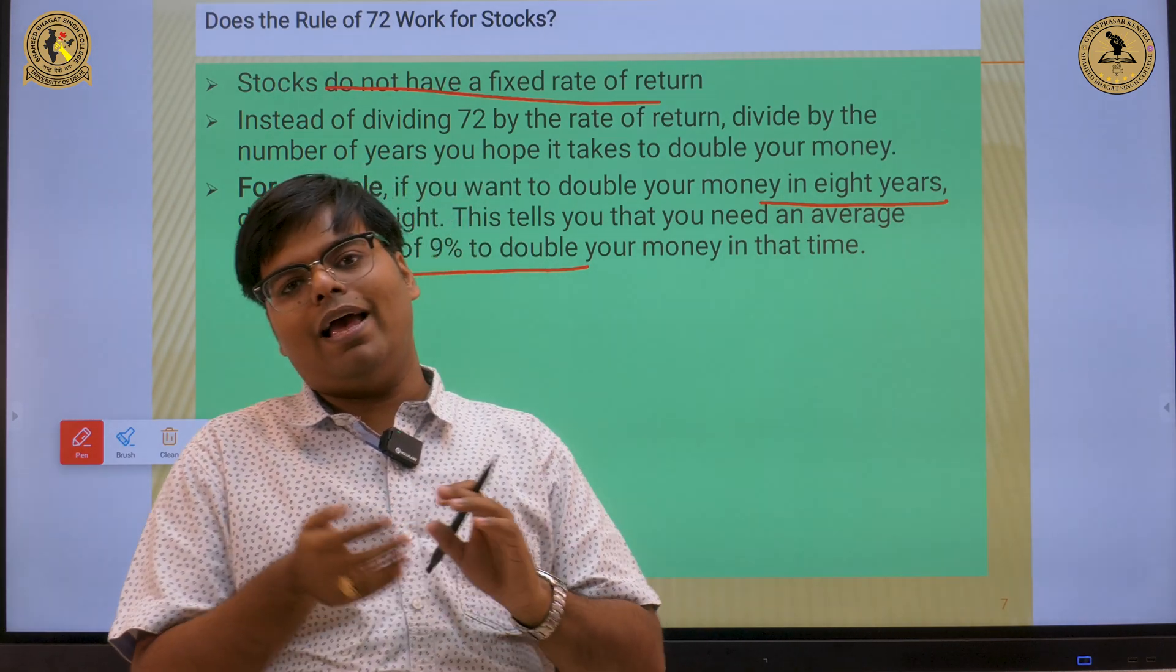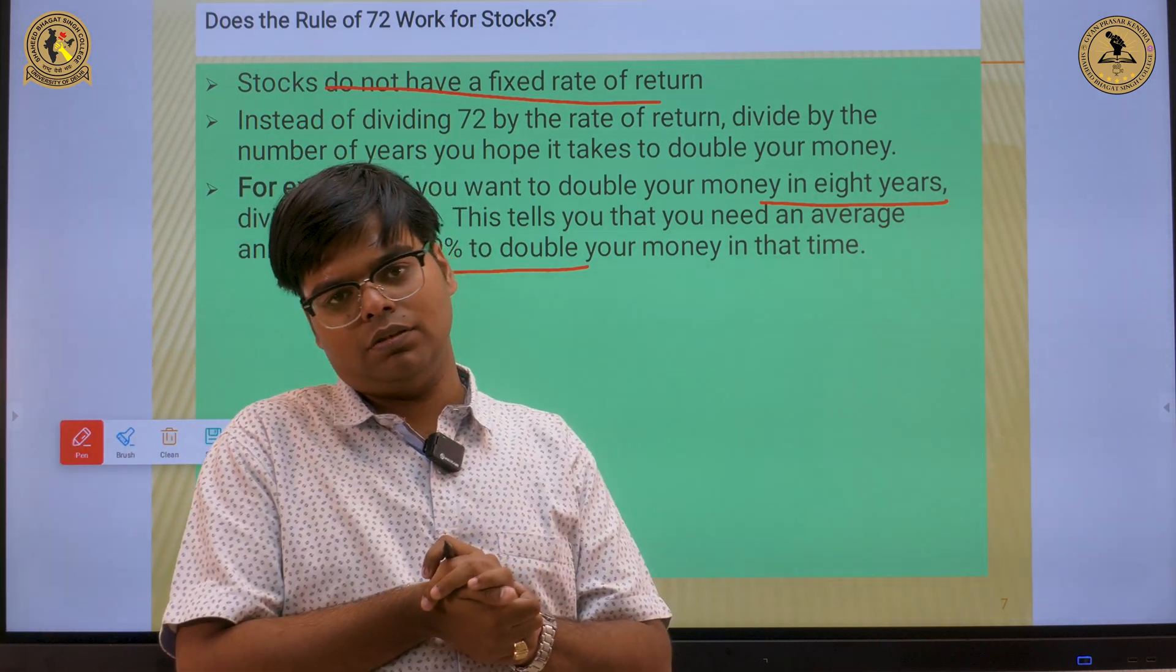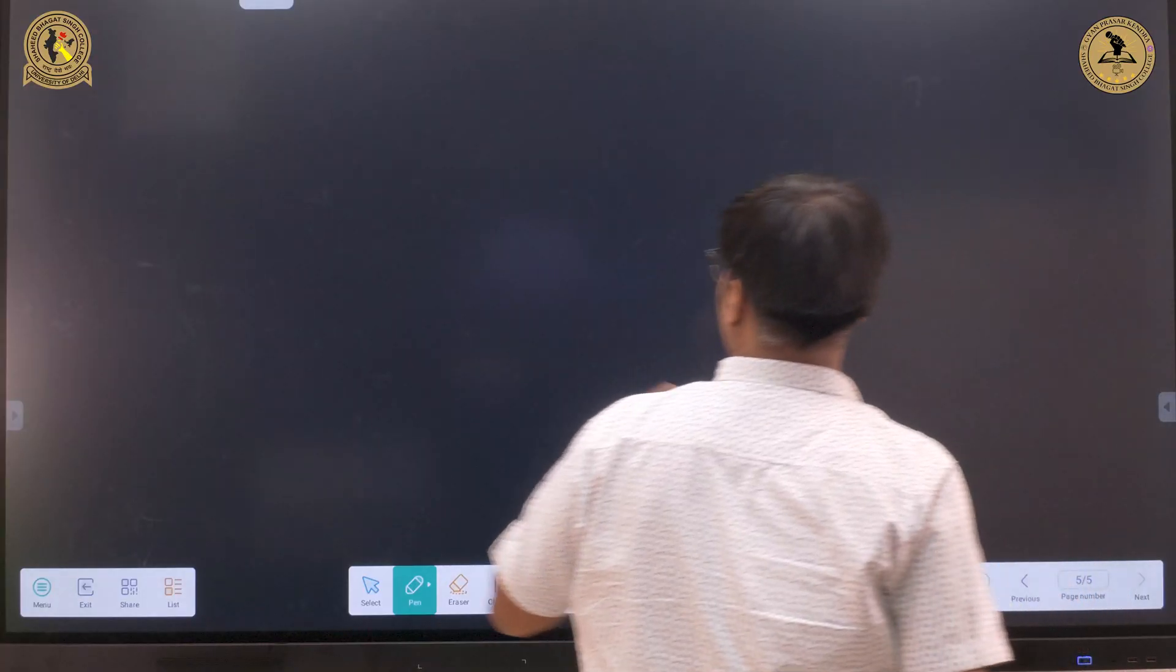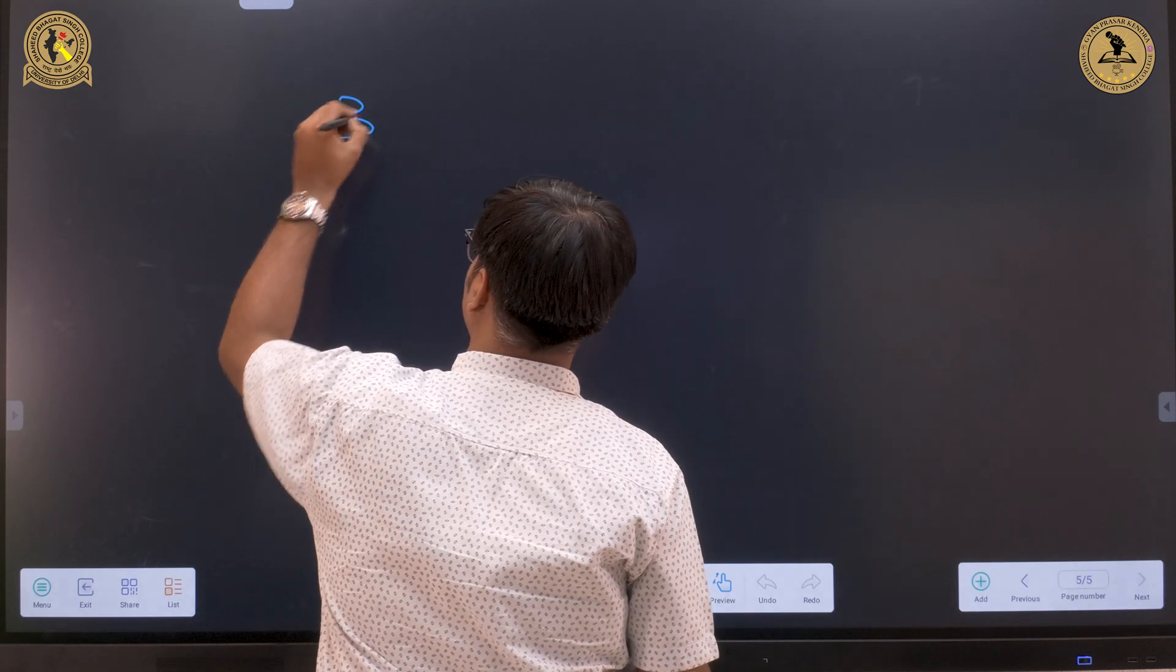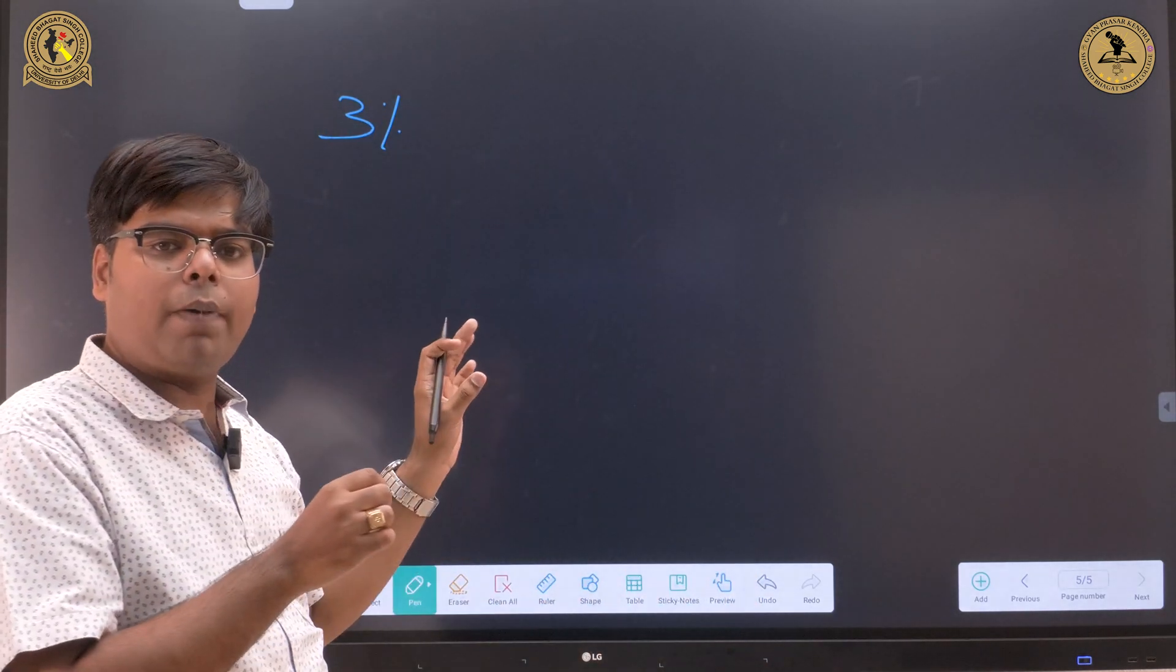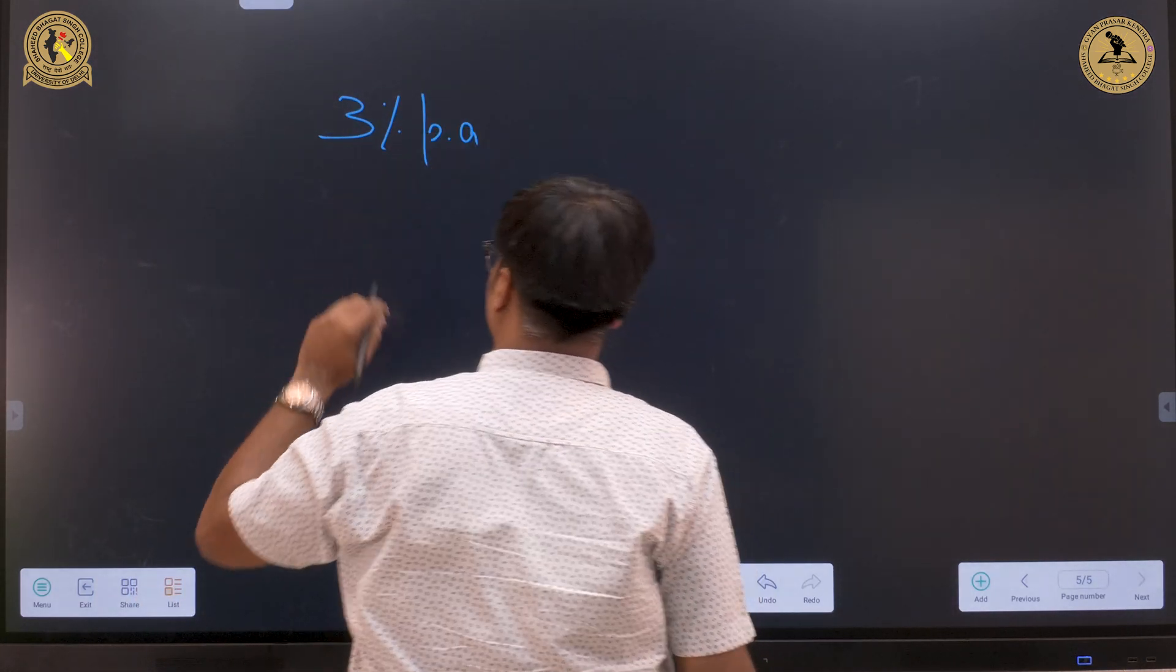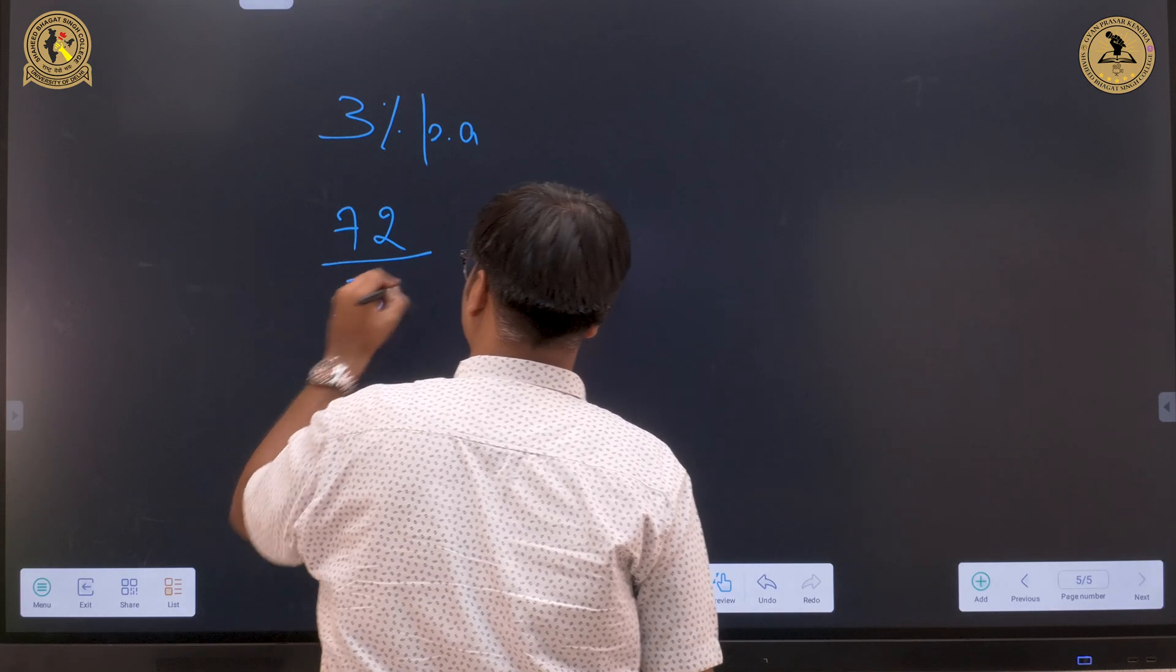Rule of 72 has various applications. So we can apply it for the population. If I am saying that my population is growing at a rate of 3% per annum, which means 3% compounded annually, which means 72 divided by 3.